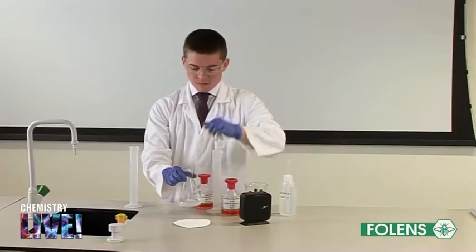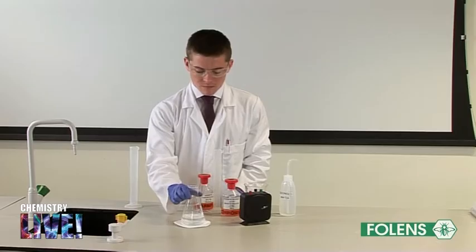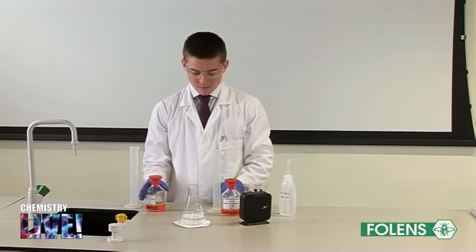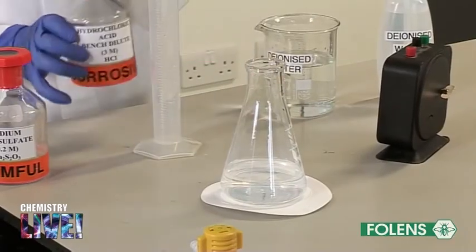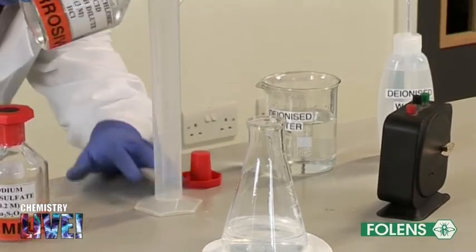Swirl the conical flask and place it on the cross as in step 1. Add 10 cm3 of the dilute hydrochloric acid as in step 1.